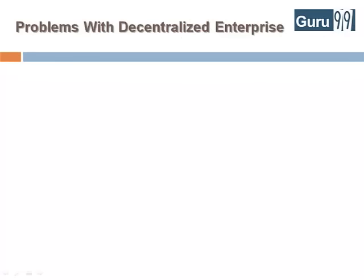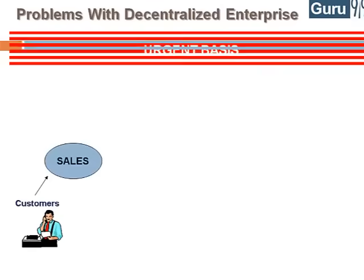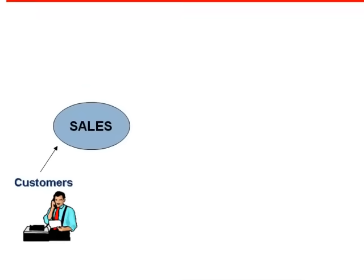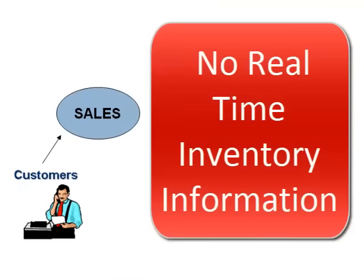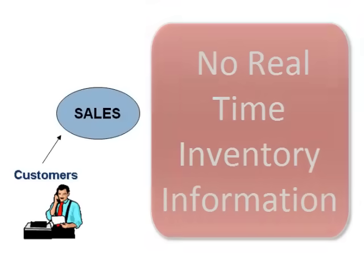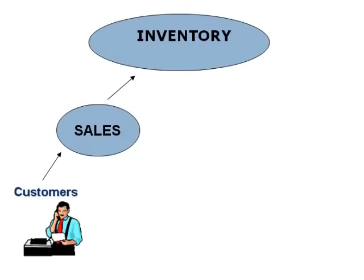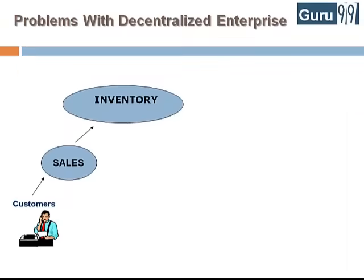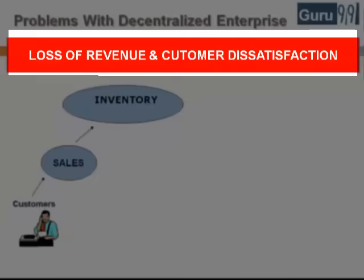To identify the problems arising from decentralized enterprise management systems, let's look at the same business process again. The customer approaches the sales team for a product, but this time he needs the product on an urgent basis. The sales team do not have real-time information access to the product's inventory, so they approach the inventory department to check availability. This process takes time and the customer chooses another vendor, leading to loss of revenue and customer dissatisfaction.